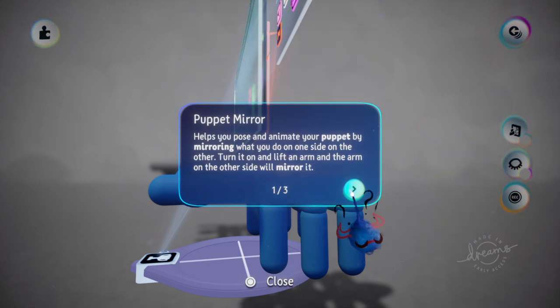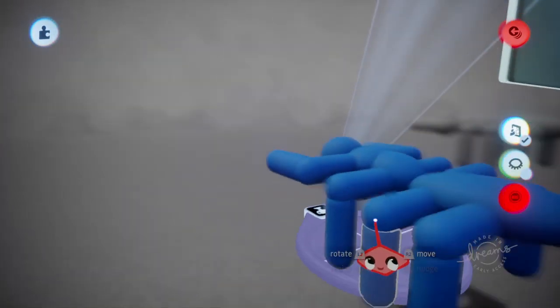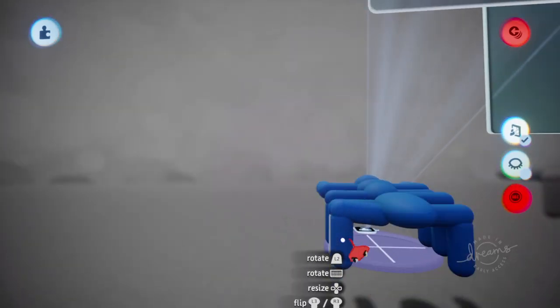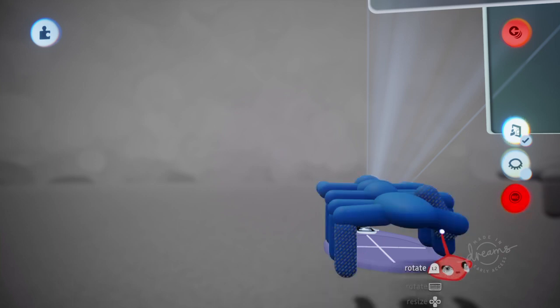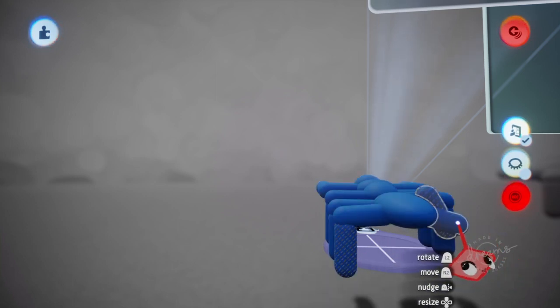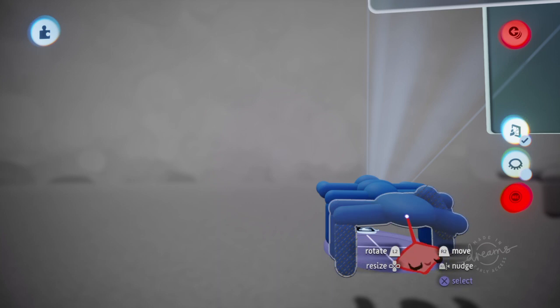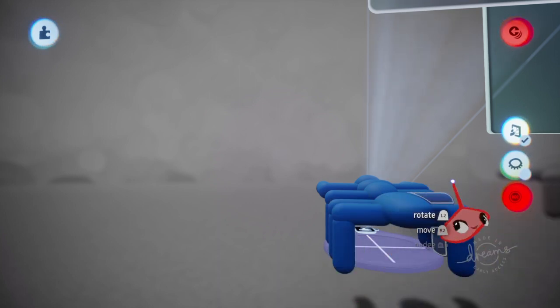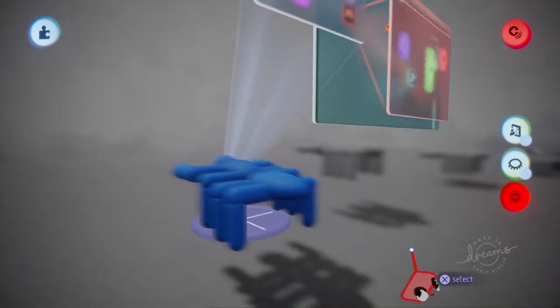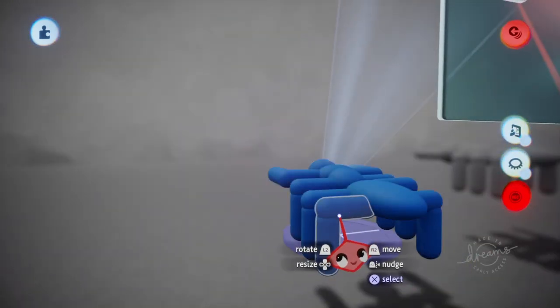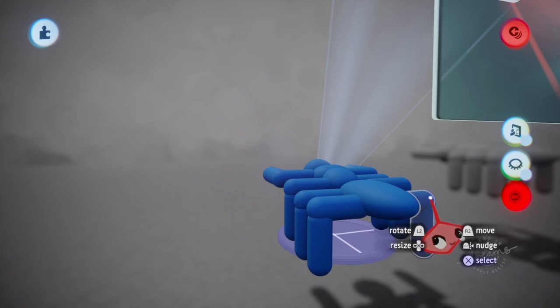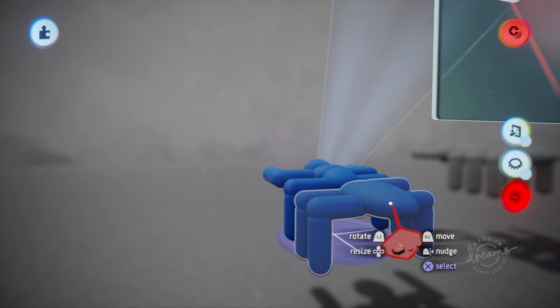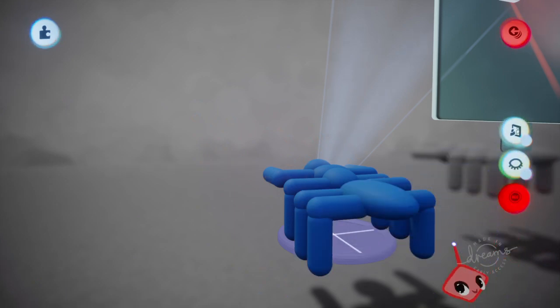Because what happens if puppet mirror is on and I move, say, this leg, it actually does, see, it affects this leg. Because I cloned them and then I flip them, so I keep puppet mirror off. Unless you do each limb independently, then you can put the puppet mirror on, but I'm sure it still won't work properly. That's why I just leave it off.